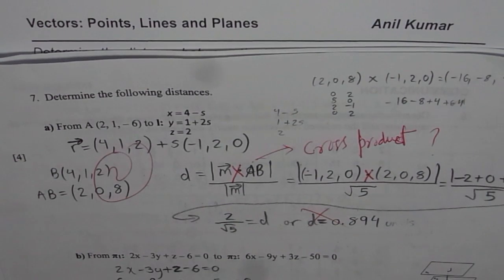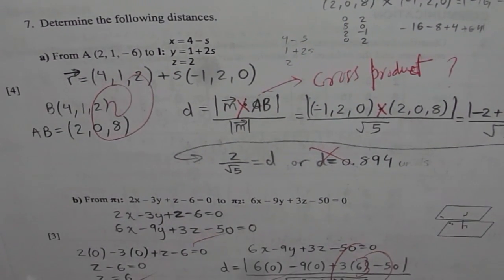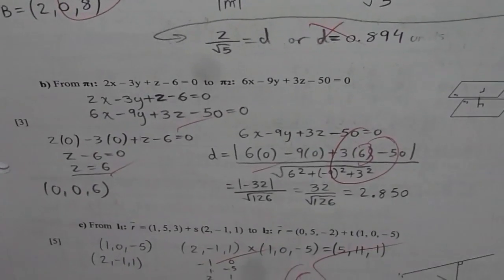I am Anil Kumar, discussing with you a test paper on vectors. We have already discussed how to find distance between point and a line, which was 7e. We have also discussed distance between two planes. Now, it is time to discuss distance between two lines.